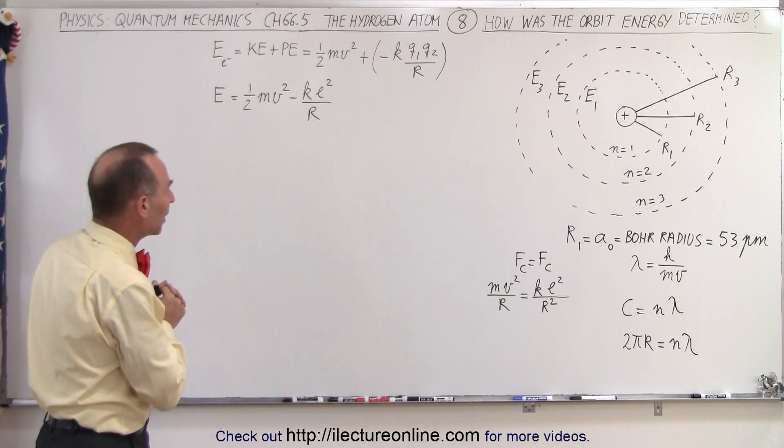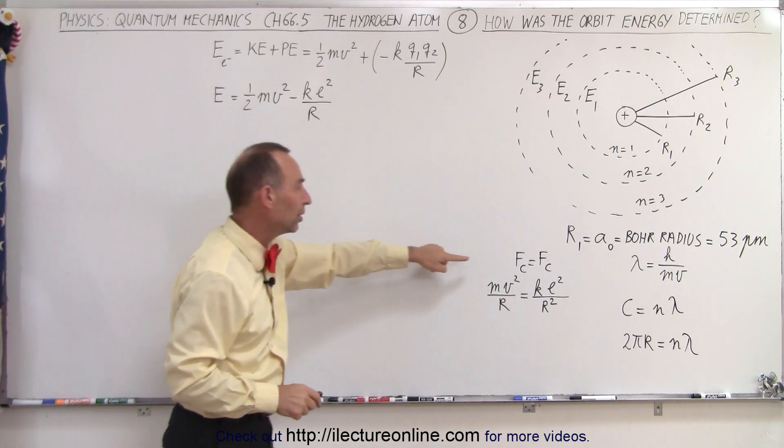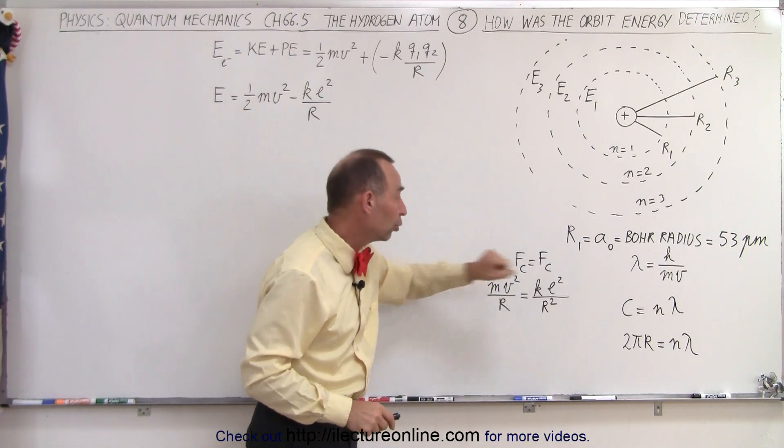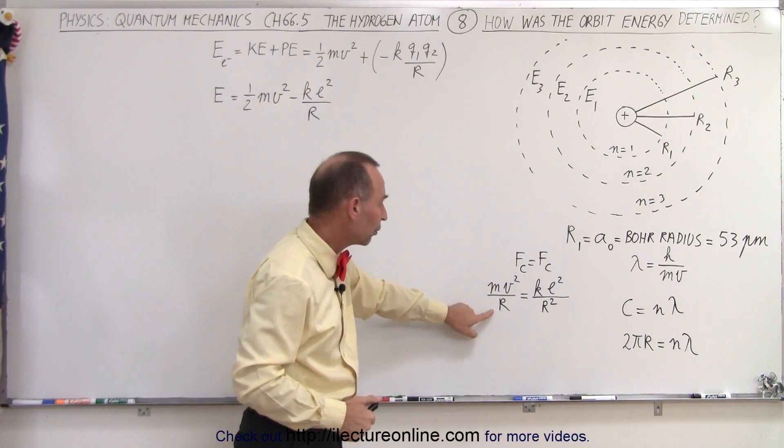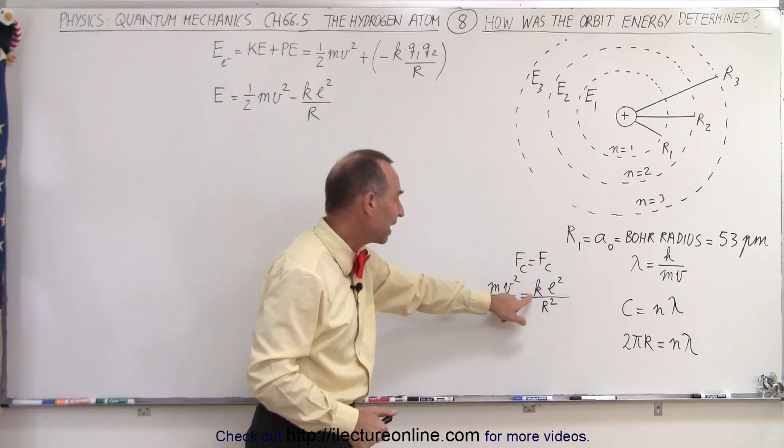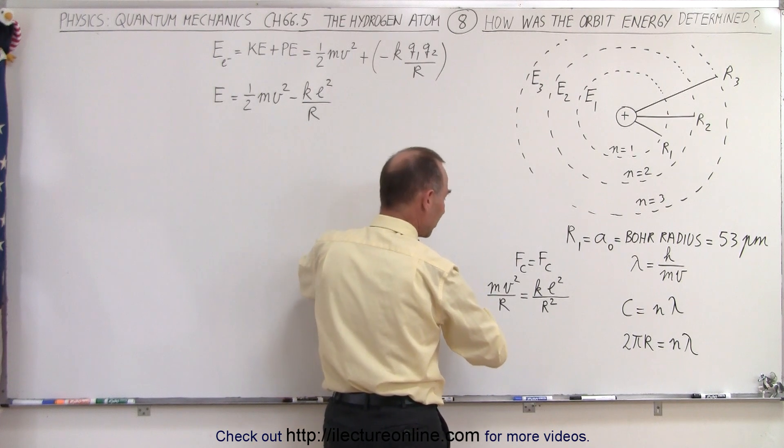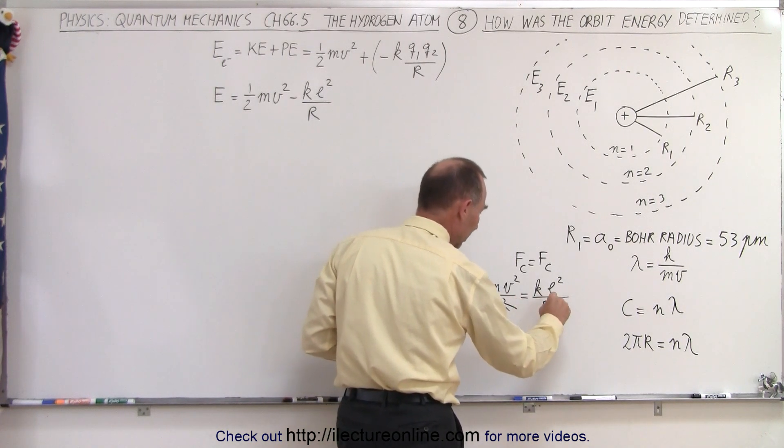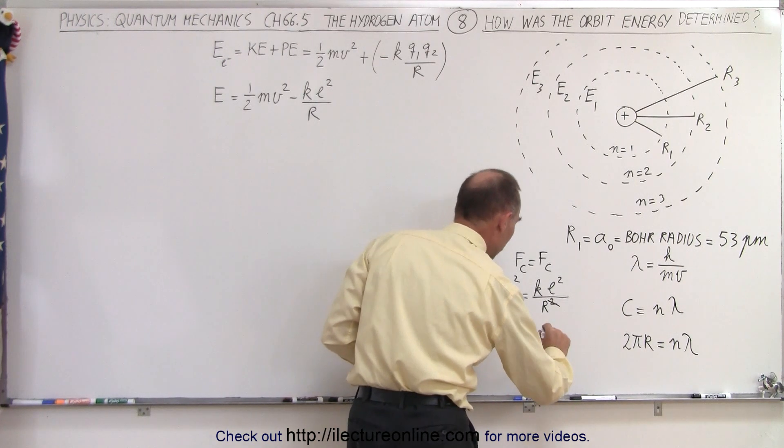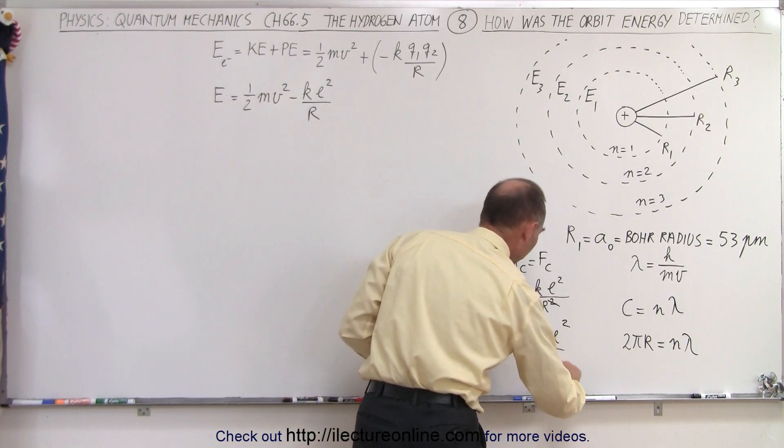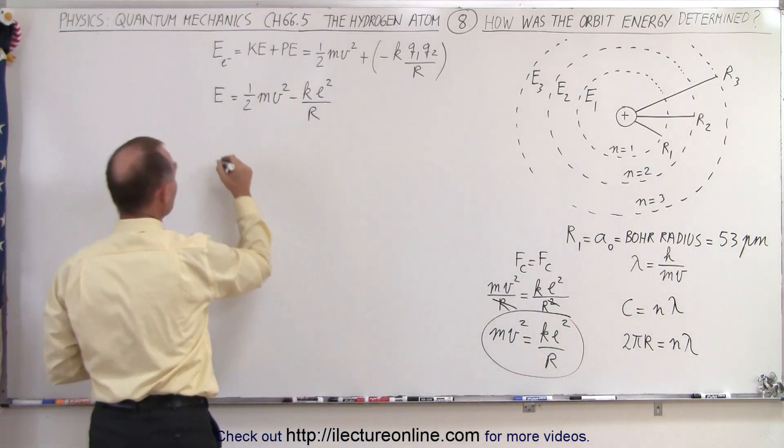So how do we make sense out of that equation? Well, first of all, what we can do is we can go back to the realization that the centripetal force equals the Coulomb force, and the centripetal force keeping the electron in orbit is mv² over r, and the Coulomb force is ke² over r. If we now get rid of the r on the left side by multiplying both sides by r, we end up with this.